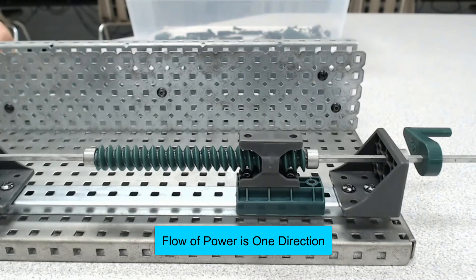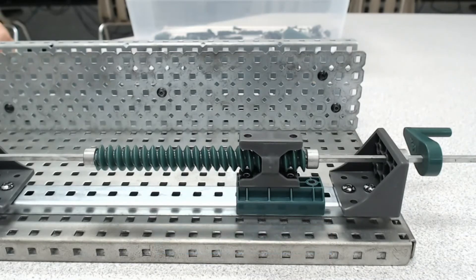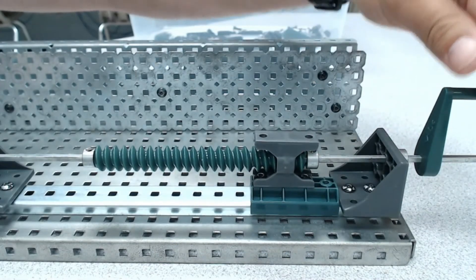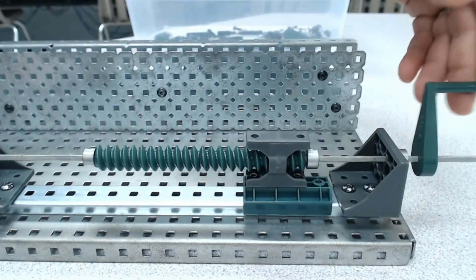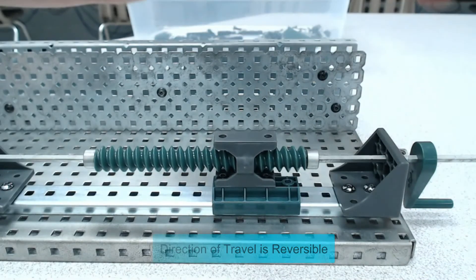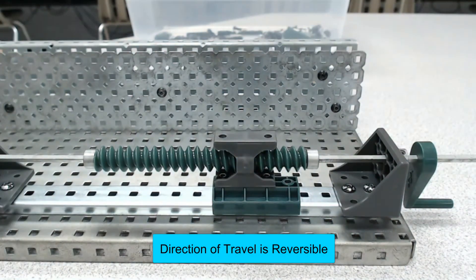But what about direction of travel? Can I turn the handle both ways? Can I move forward and reverse? So here's one, what if I go this way? So we see here that the direction of travel is actually reversible on this system.